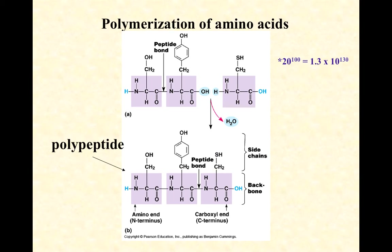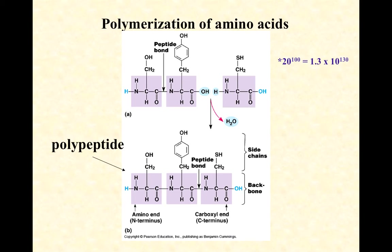With 20 different amino acids, even a small protein of only 100 amino acids amounts to 1.3 × 10^130 possible combinations — and most proteins are considerably larger than that. Just as with nucleic acids, the diversity possible with amino acids is practically infinite. There are 1.13 followed by 129 zeros possibilities just for building a simple protein, never mind a more complex one.